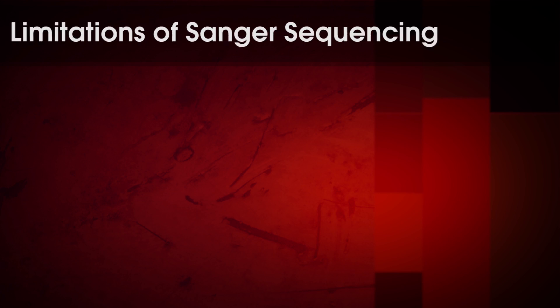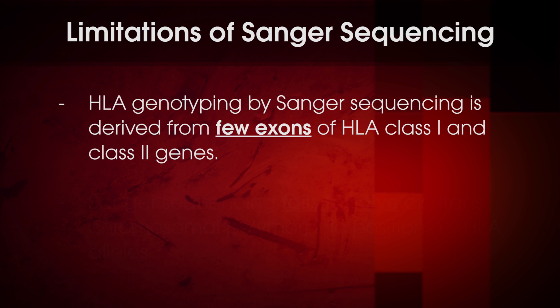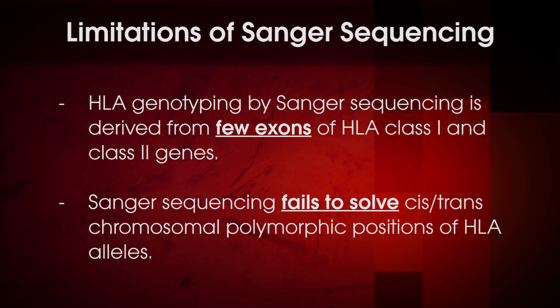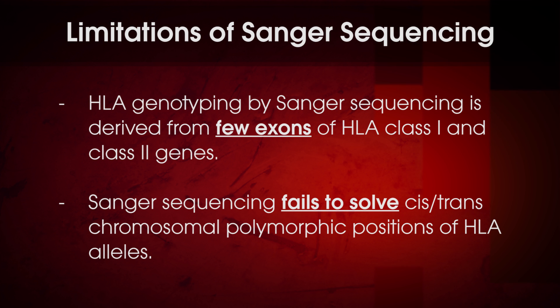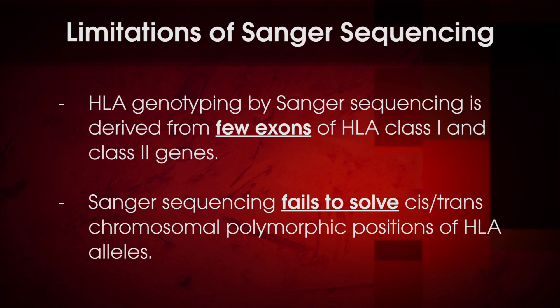Currently, the standard of care for HLA typing to select a donor for transplantation is to use a low-to-intermediate resolution method first, and then reflex the candidates to confirmatory Sanger sequencing to obtain high-resolution HLA allele typing information and select the best matched donor. Sanger sequencing produces incomplete and ambiguous HLA typing results because sequencing data is derived from few exons of HLA class 1 and HLA class 2 genes. Sanger sequencing also often fails to distinguish among different HLA alleles due to difficulty with solving cis and trans-chromosomal position of those alleles.